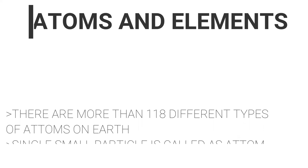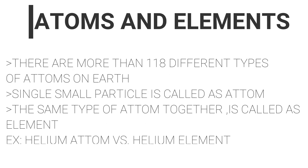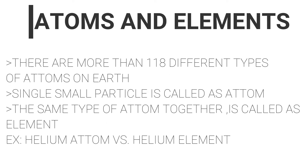Next is atoms and elements. There are more than 118 different types of atoms on earth. A single small particle is known as an atom. The same type of atoms together is known as an element. Example: helium atom versus helium element, lithium atom versus lithium element.